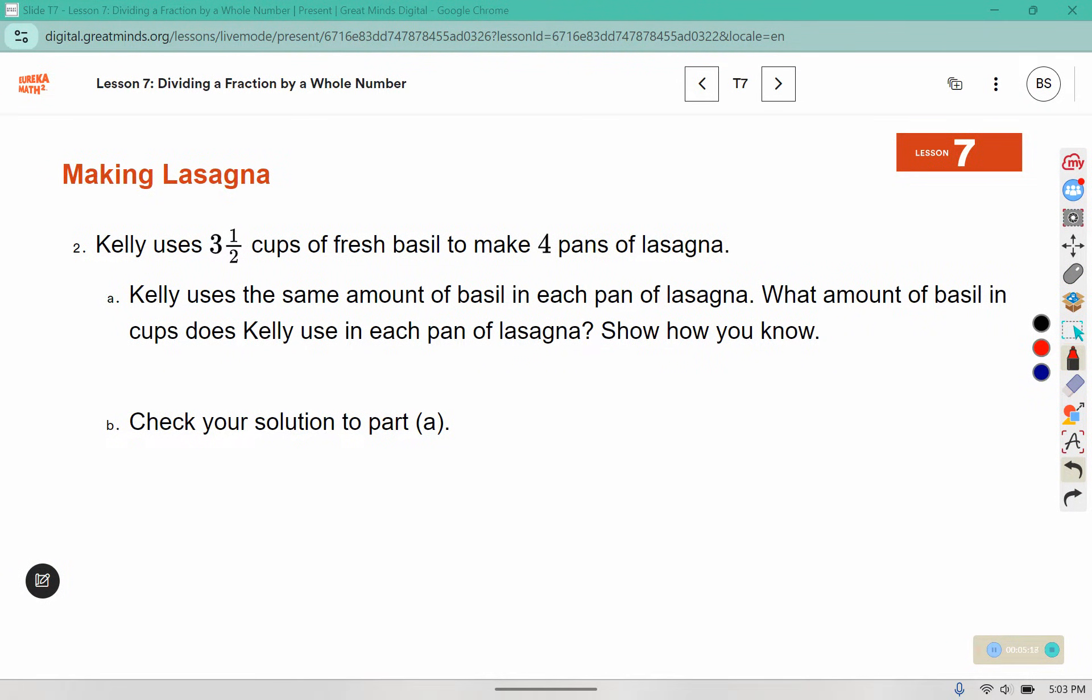In this one, Kelly uses 3½ cups of fresh basil to make 4 pans of lasagna. Kelly uses the same amount of basil in each pan. What amount of basil in cups does Kelly use in each pan of lasagna? Show how you know. So we can change 3½ to an improper fraction. 3 times 2 is 6 plus the one on top makes 7/2, and we're splitting that amongst 4 pans of lasagna. Again, we leave the first fraction, change the symbol, and change the second fraction. Don't forget about the invisible one underneath whole numbers. 7 times 1 is 7, 2 times 4 is 8.